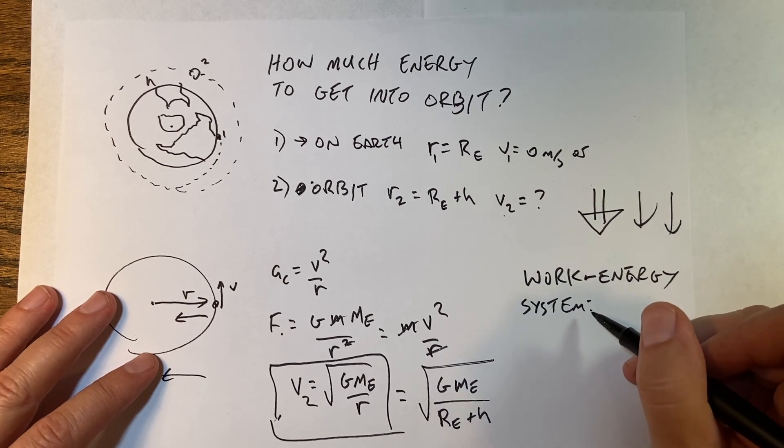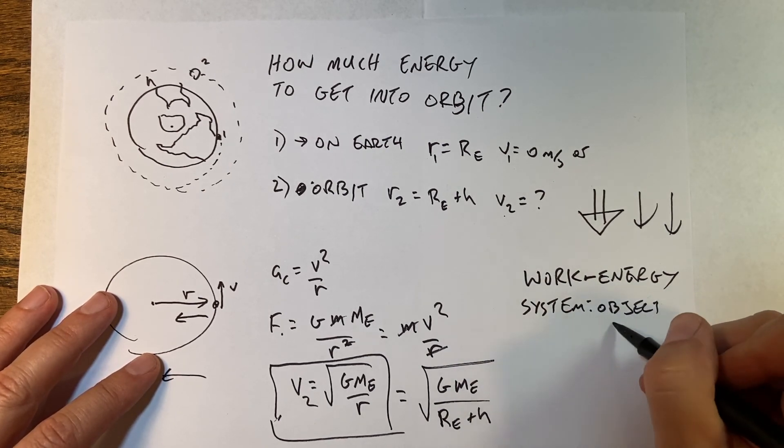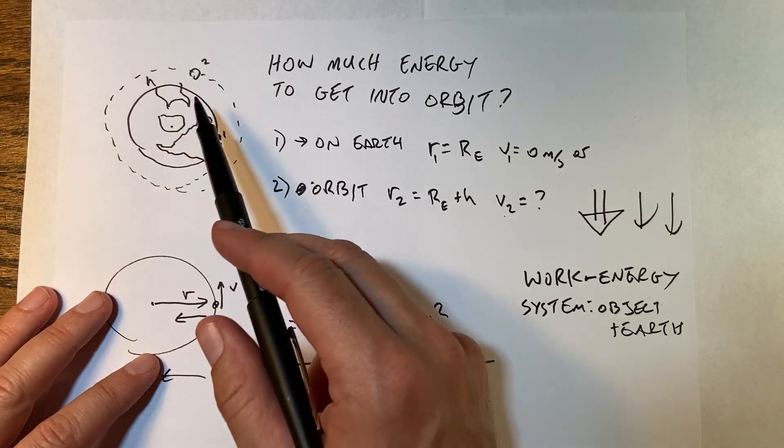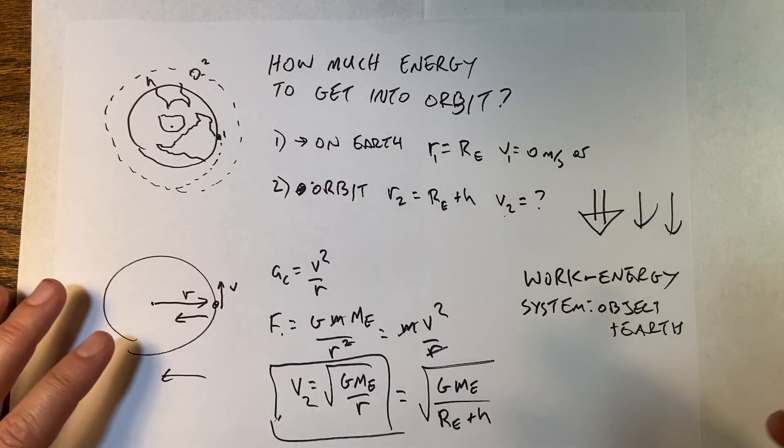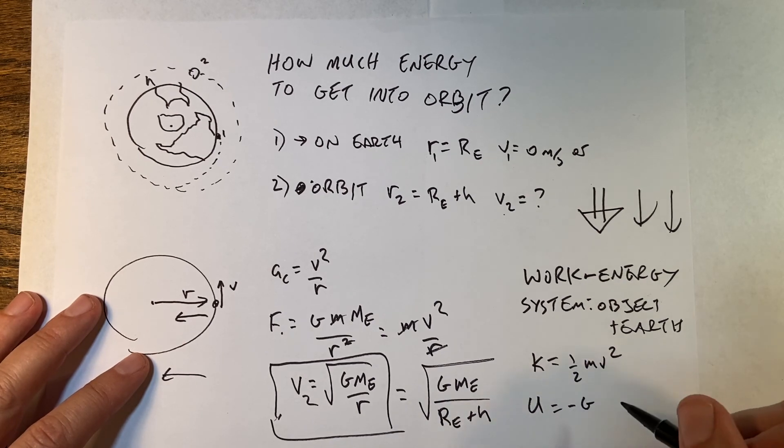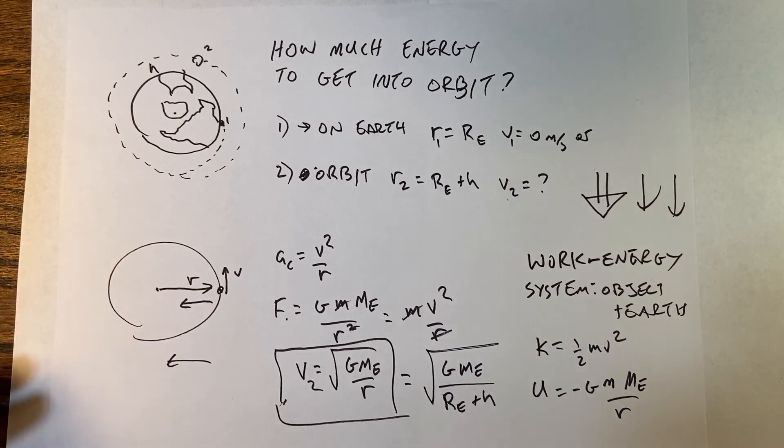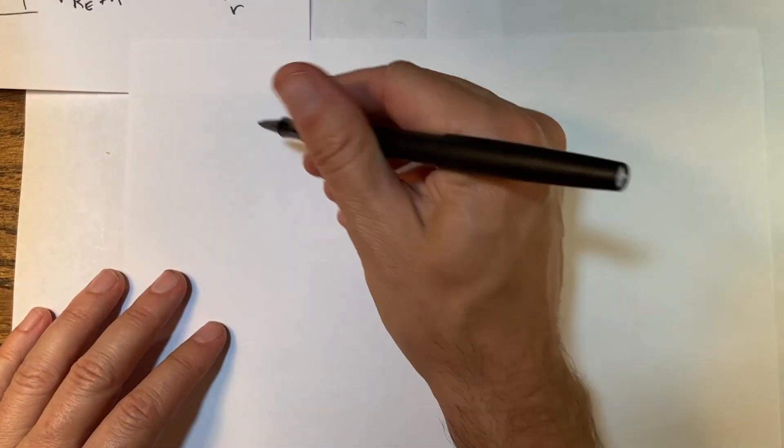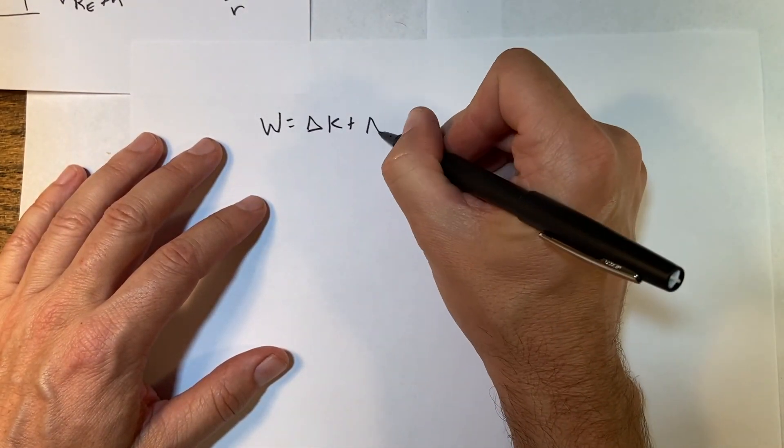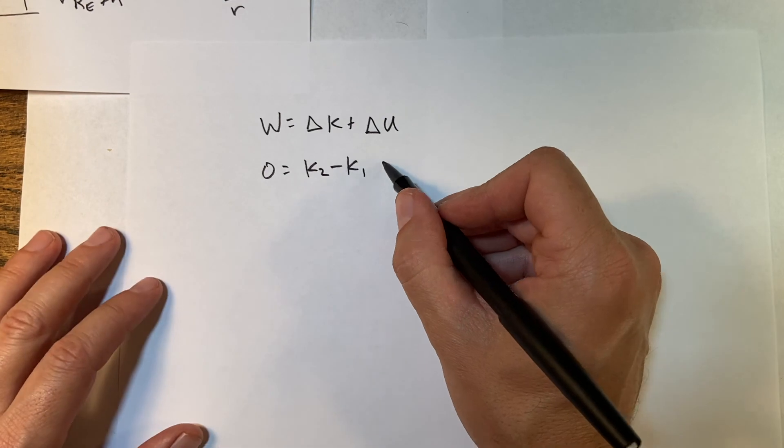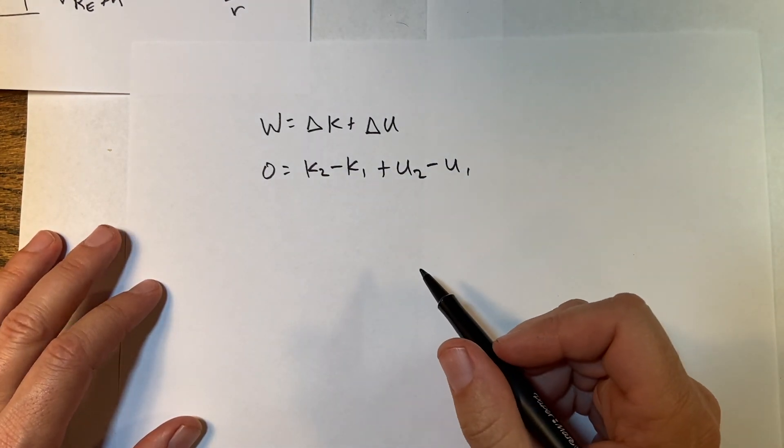What's my system? It's going to be the object plus the earth, because then I have this gravitational interaction between the two would be a potential energy. So that means I'm going to have kinetic energy, one half mv squared, and then gravitational potential energy, negative g times mass of the object times mass of the earth over r. So let's do this. There's no work done on the system, so I have work equals change in kinetic plus change in potential. It's k2 minus k1 plus u2 minus u1.